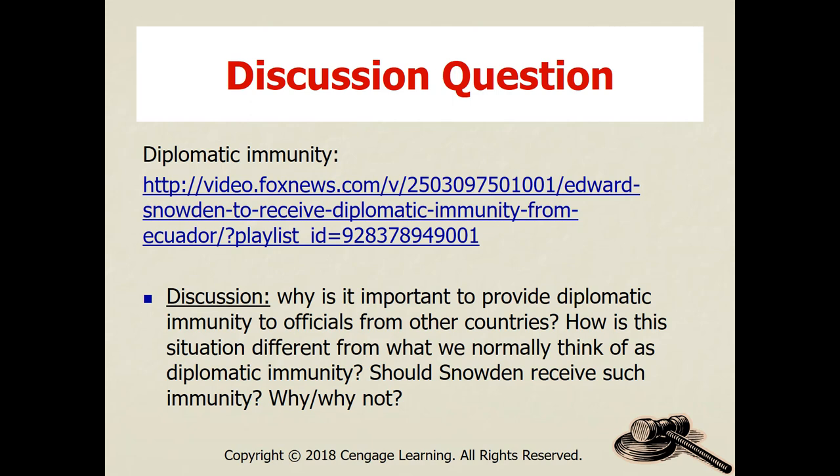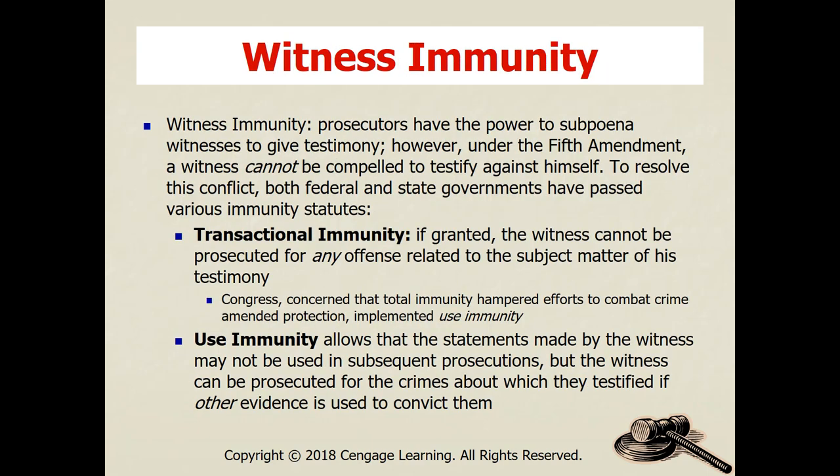There is a special on diplomatic immunity you can look at — it's an interesting discussion. For example, there is a case of a U.S. diplomat's wife in England who was involved in a car accident, had diplomatic immunity, returned to the United States, and England would like to try her, but the U.S. hasn't waived diplomatic immunity. Now let's talk about what is far, far more common: witness immunity.